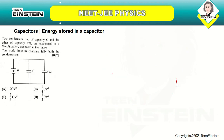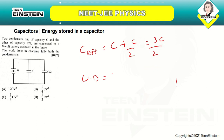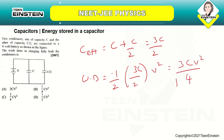Two condensers of capacitance C and C/2 are connected to a volt battery as shown. The work done in fully charging both condensers: C_eff = C + C/2 = 3C/2. Work done = ½ × (3C/2) × V² = 3CV²/4. The correct answer is option C.